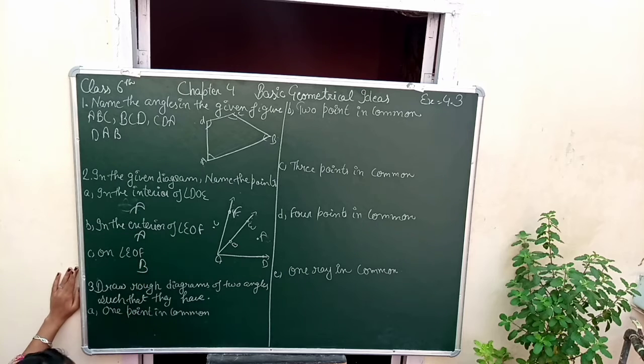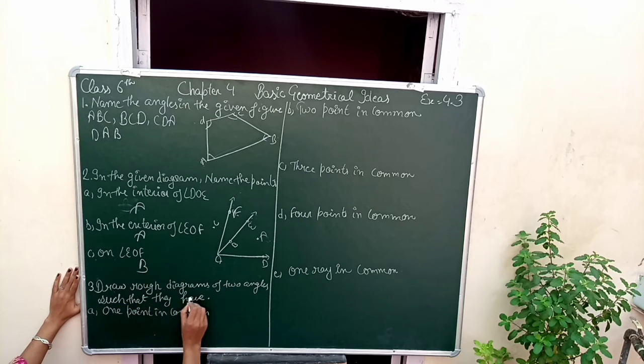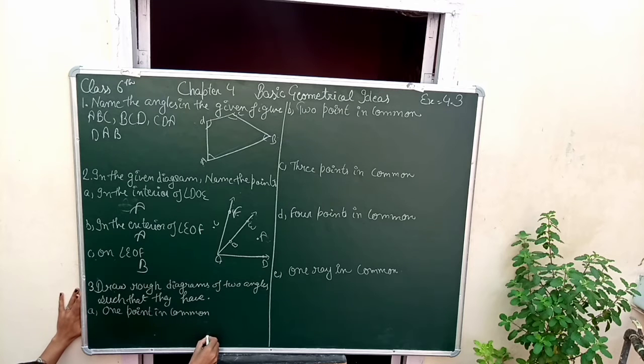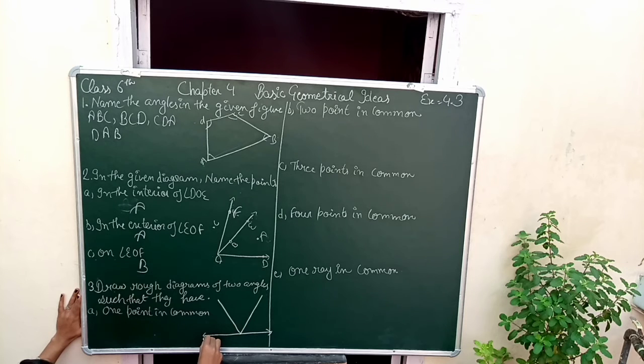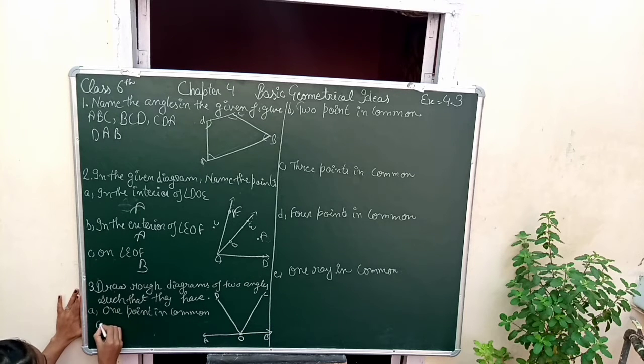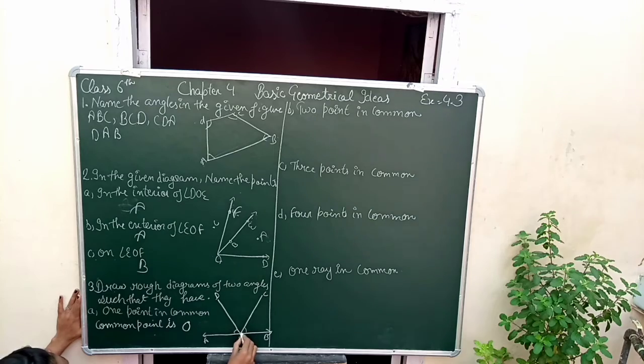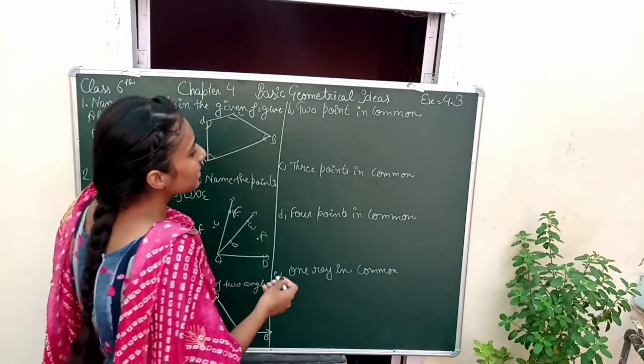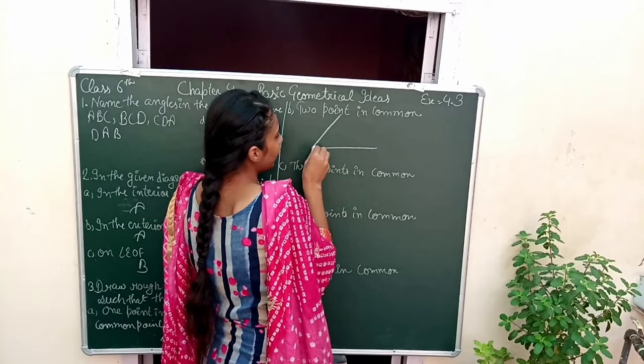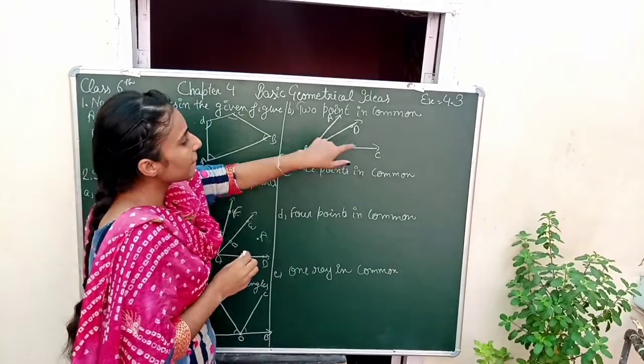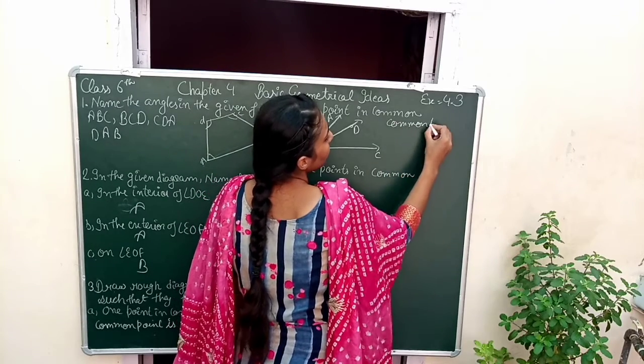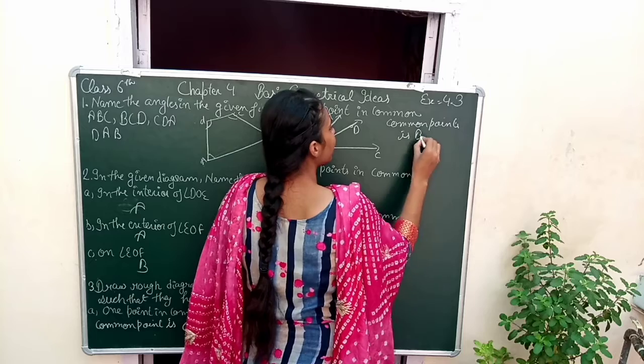So this is our question number 2. Next, question number 3: draw a rough diagram of two angles such that they have one point in common. We have two angles which have one point in common. How do we draw it? This is our figure. Name A, B, C, D, O. So this is our point B and D. Common points are B and D.